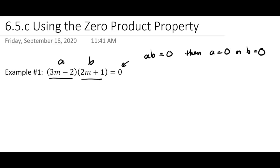Since we're multiplying them and it equals zero, then one of two things happens: either 3m minus 2 equals zero or 2m plus 1 equals zero. You're taking each factor and setting it equal to zero, and that gives us two little baby equations.